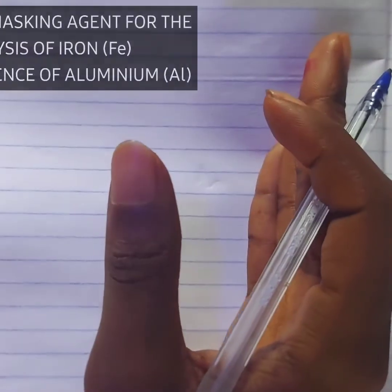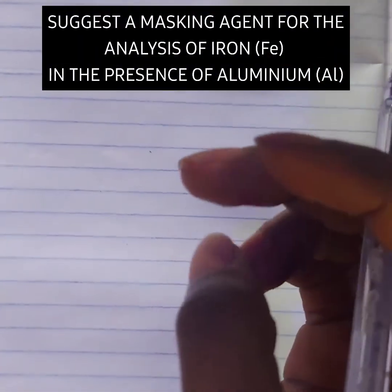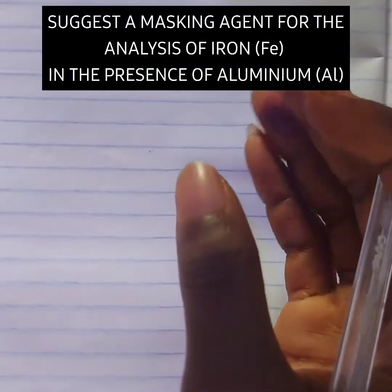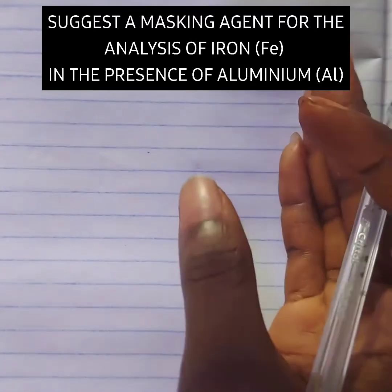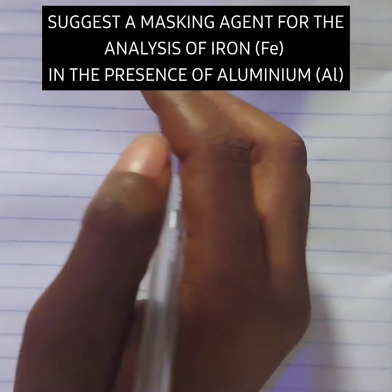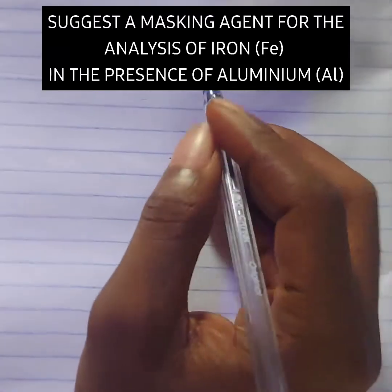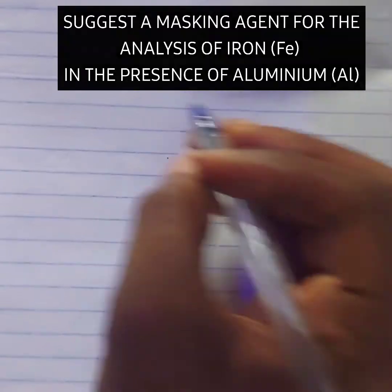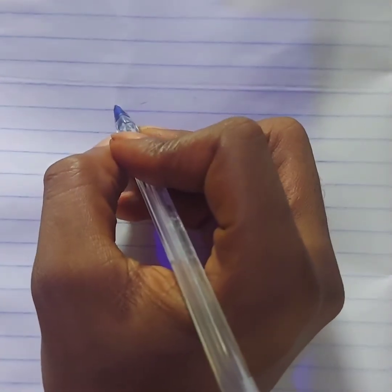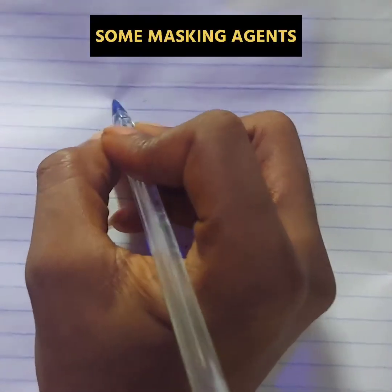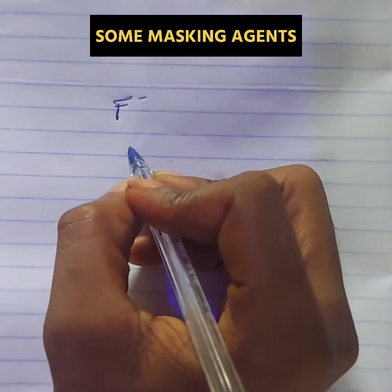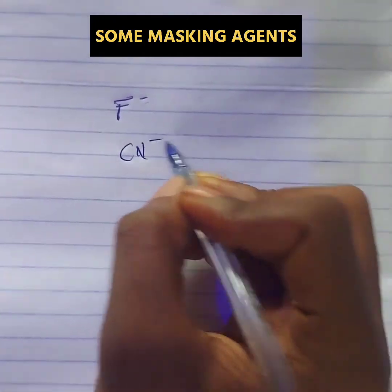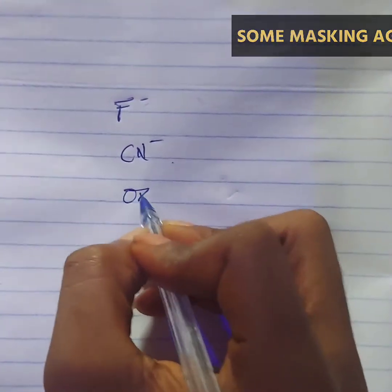The only way to prevent your interference from coming into play in your analyte determination is by masking it. Masking it is binding it with a suitable masking agent. So you have to know some examples of masking agents and the ions they can actually mask.